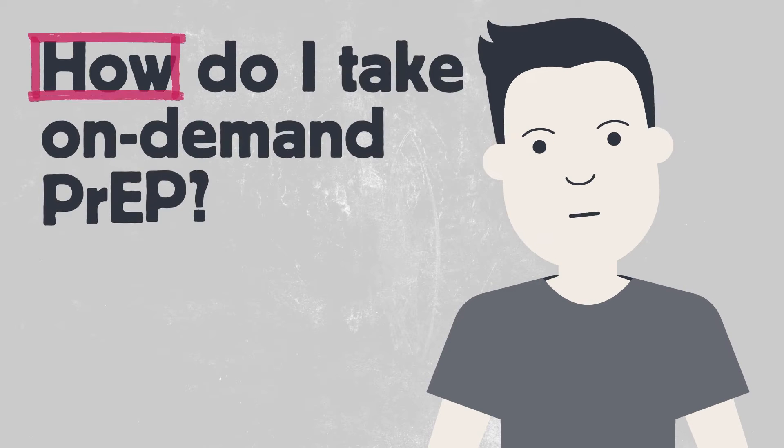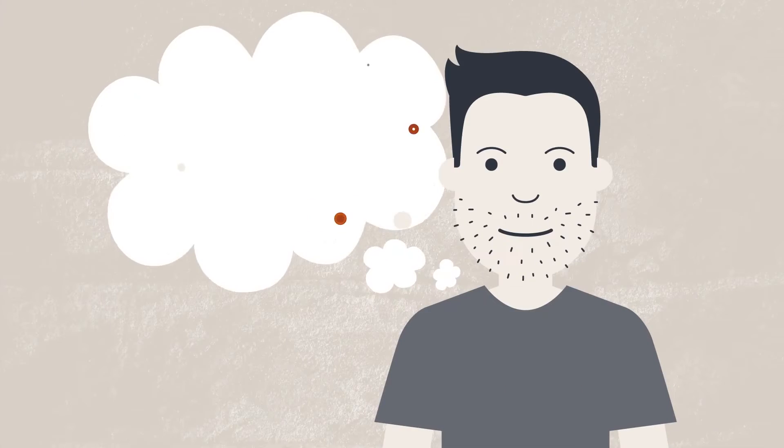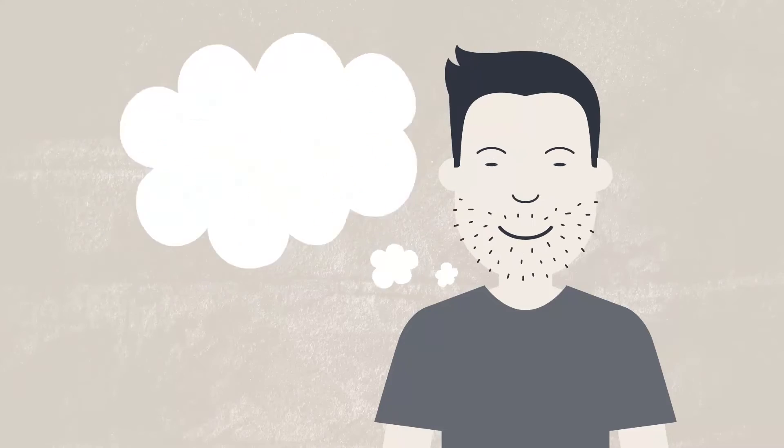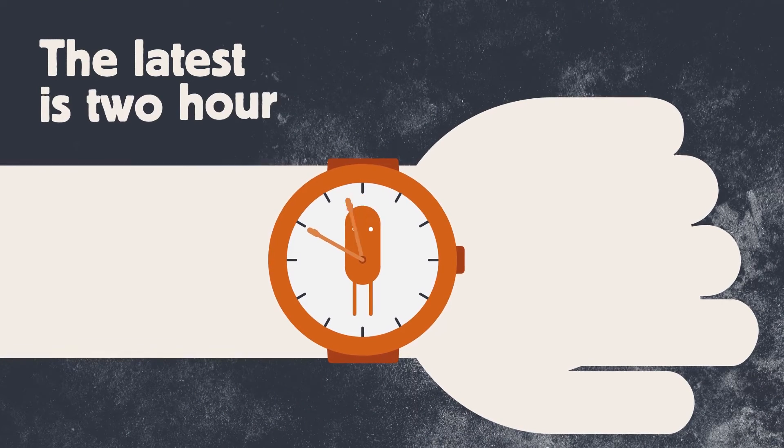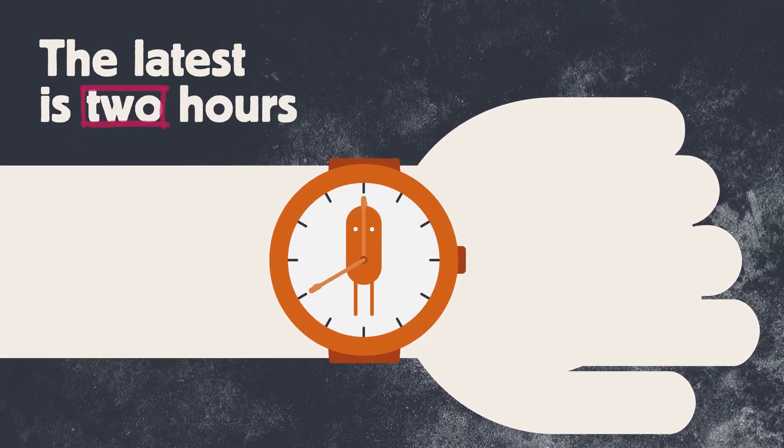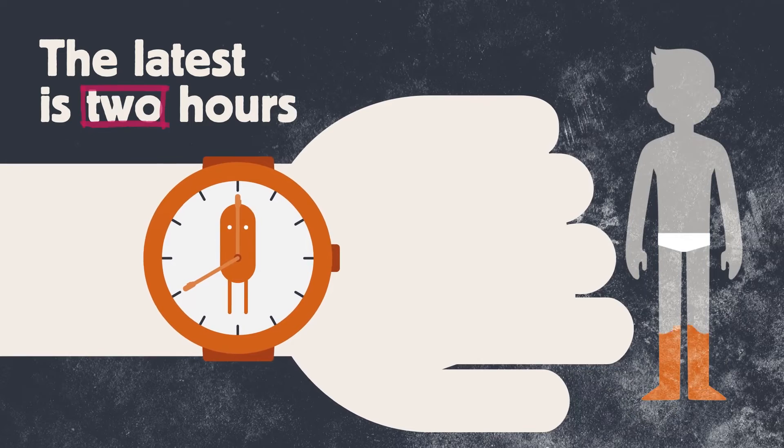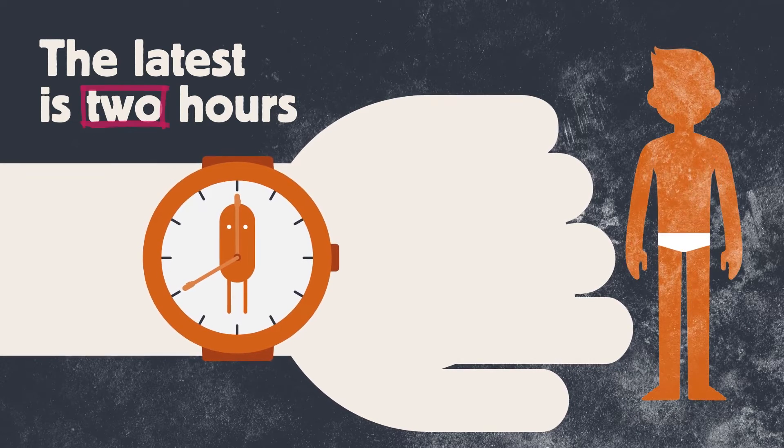How do I take on-demand PrEP? Planning to have sex? Take two pills at once beforehand. The latest you can take this double dose is two hours before you have sex, because it's very important that you give the pills time to be absorbed into your body.